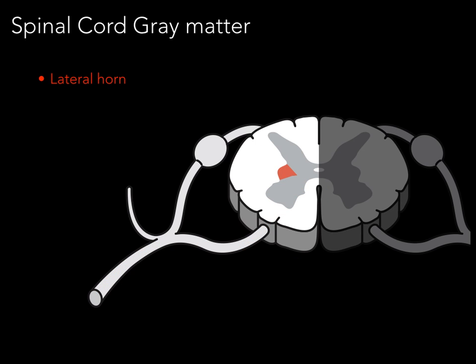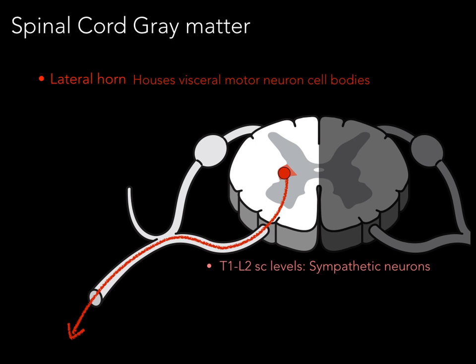The lateral horn houses visceral motor neuron cell bodies. There is a visceral motor neuron cell body and the axon exits out the ventral root and goes to innervate viscera, glands, and organs. The specific thing about this lateral horn, or intermediate horn, is that it's not located at every segmental spinal cord level. It's found between T1 and L2 spinal cord levels, where all sympathetic neurons arise, and also between S2 and S4 spinal cord levels, where parasympathetic neurons arise. We do not find the lateral horn in the cervical region or in parts of the lumbar region.